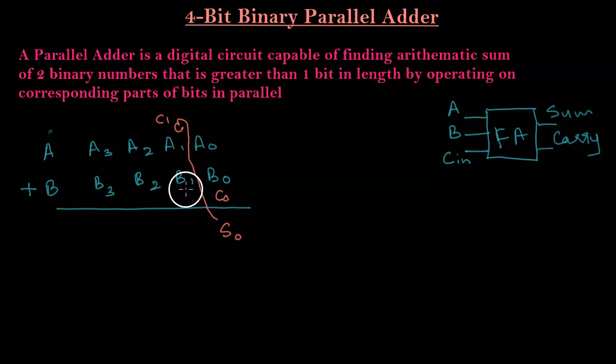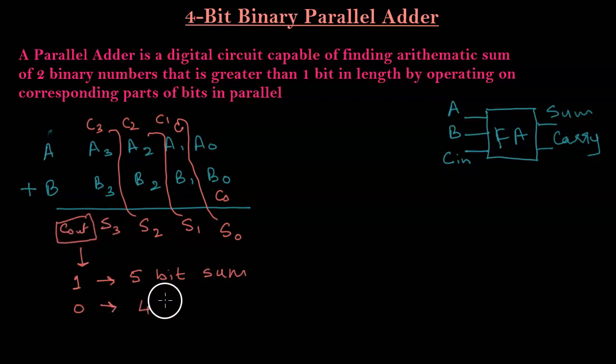So then A1 plus B1 plus C1 gives you again S1 and there's a carry which is C2. Then A2 plus B2 plus C2 gives you sum 2. Again, we have a carry bit C3. Then we have A3 plus B3 plus C3 which will give you sum 3 and the final carry out. Now this carry out, it can either be 1 or it can be 0. So if it becomes a 1, that means we have a 5-bit sum. And if we have a 0, that means it remains a 4-bit sum.